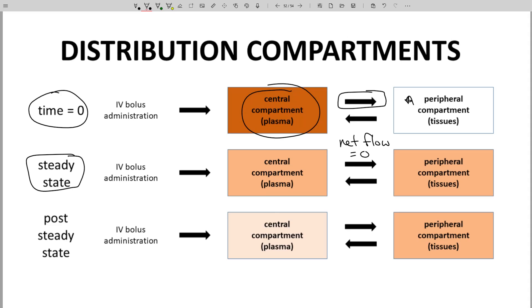As elimination via hepatic or renal clearance occurs from the central compartment, plasma concentration will drop and the net flow of the molecule will be from the peripheral compartment back to the central compartment.